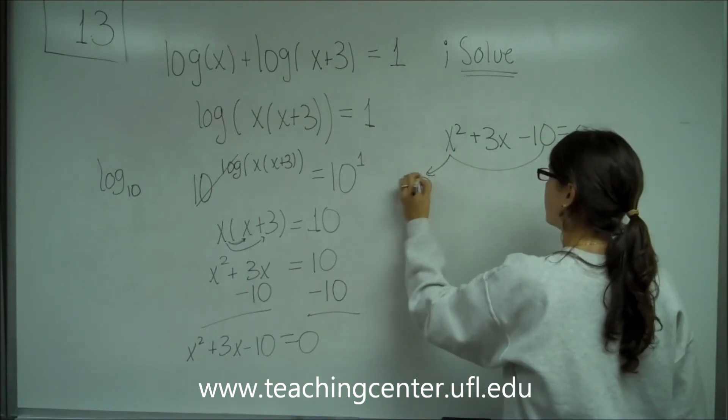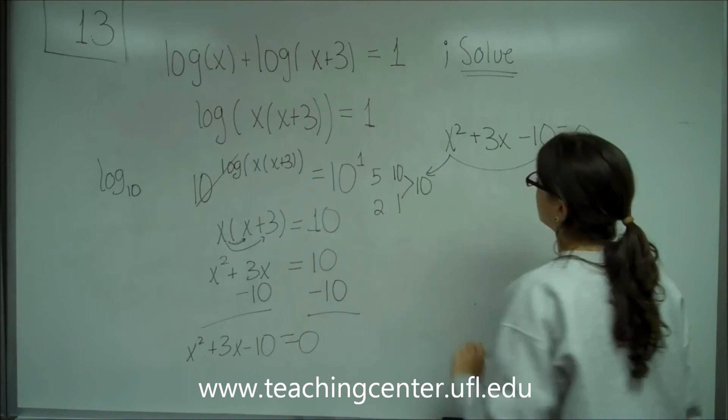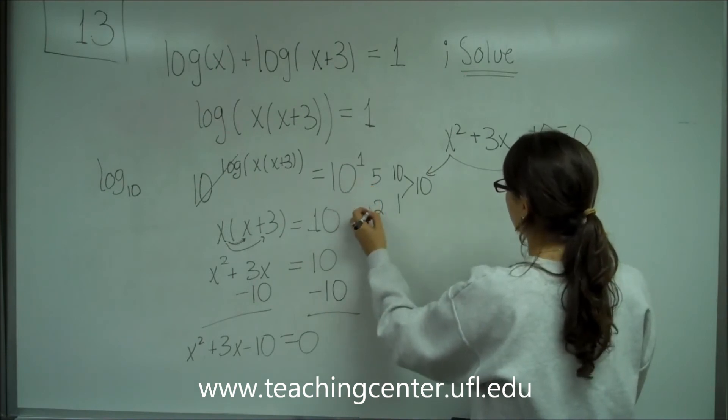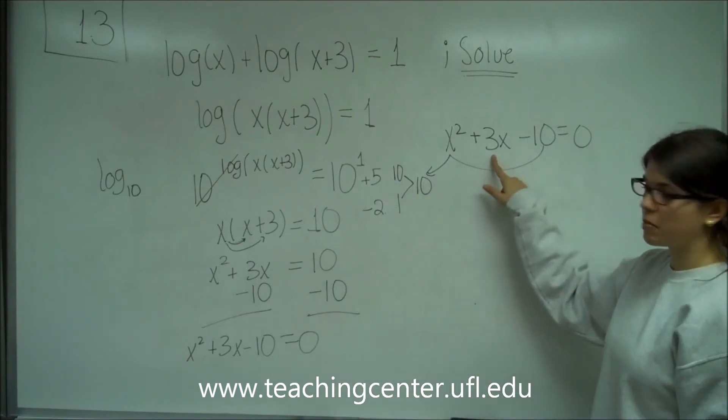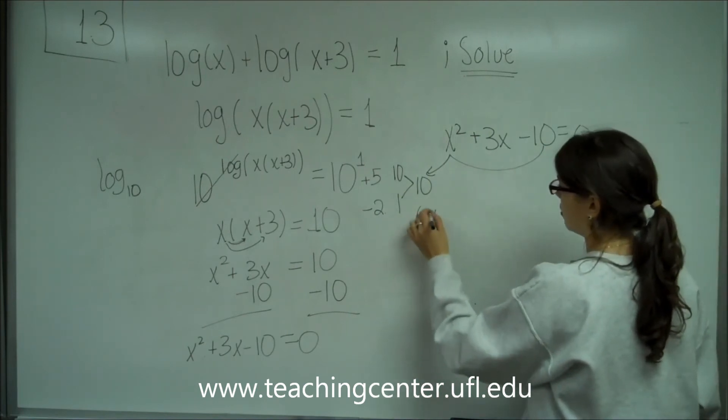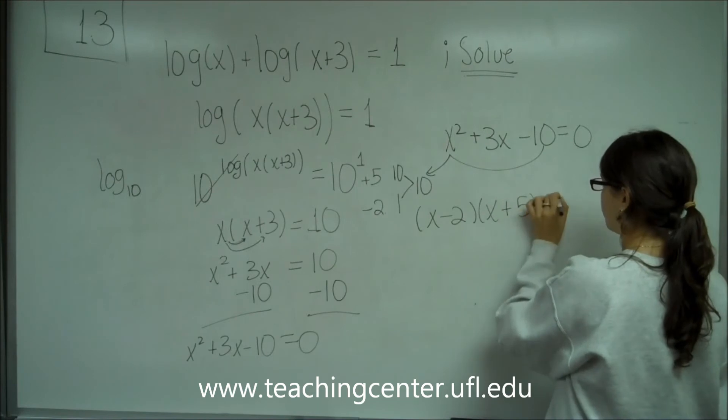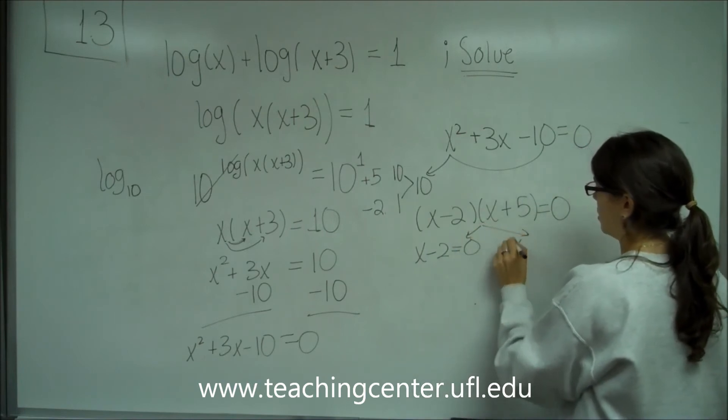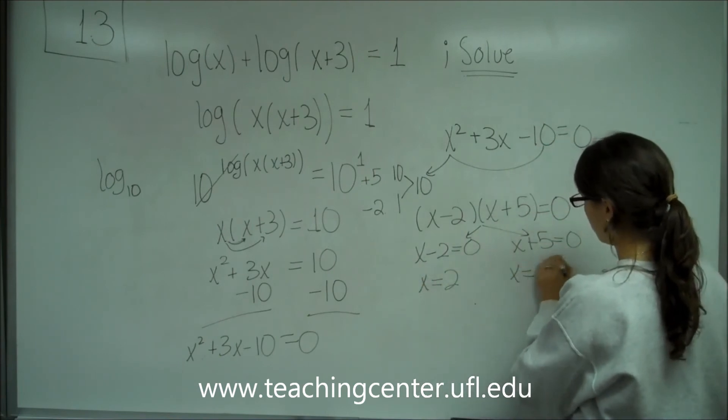So let's see, multiplying 10 times 1 gives us 10. The factors of 10 are 10 and 1, 5 and 2. So here I see that if I choose a positive 5 and a negative 2, that if I add those, it gives me a positive 3. And if I multiply them, it gives me a negative 10 like this. So that must be the right factors. So I have (x-2)(x+5) = 0.